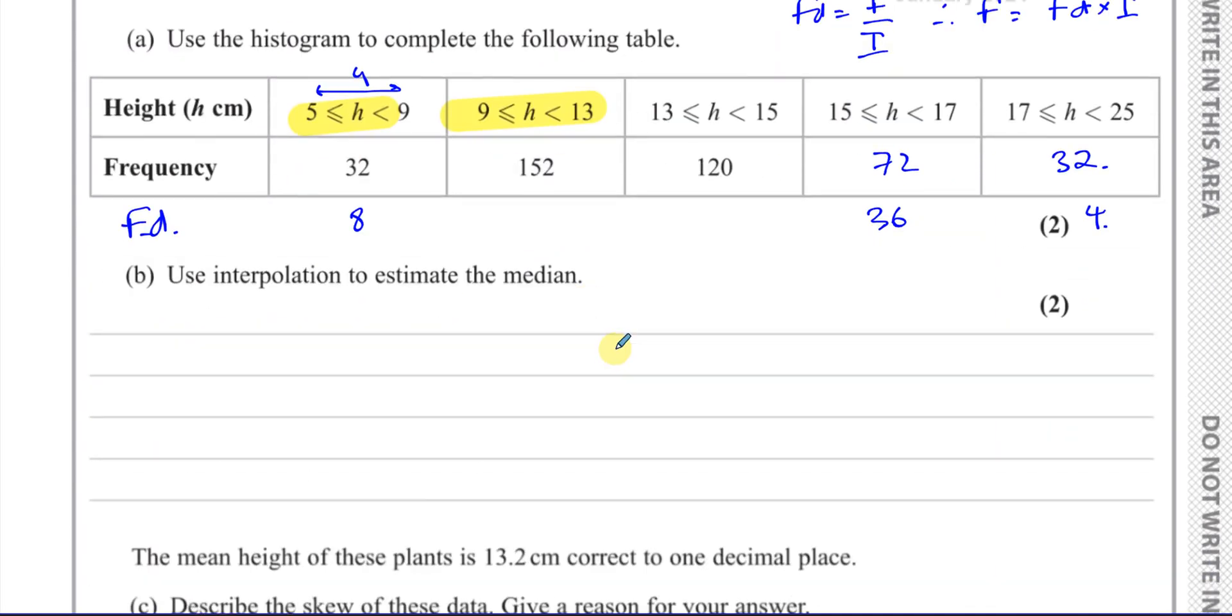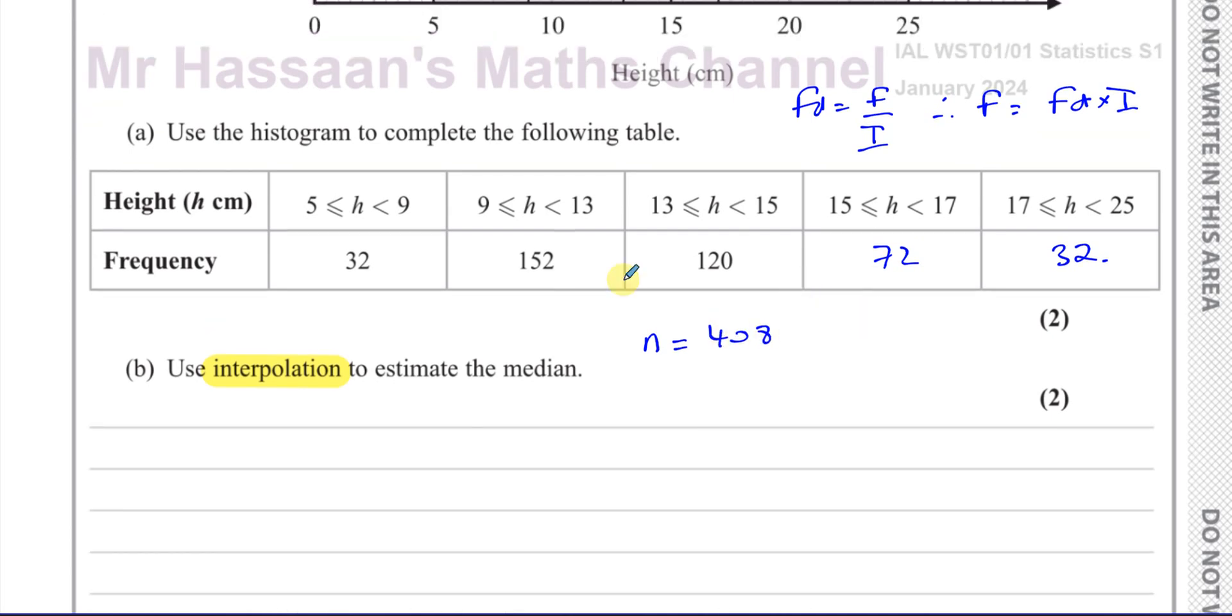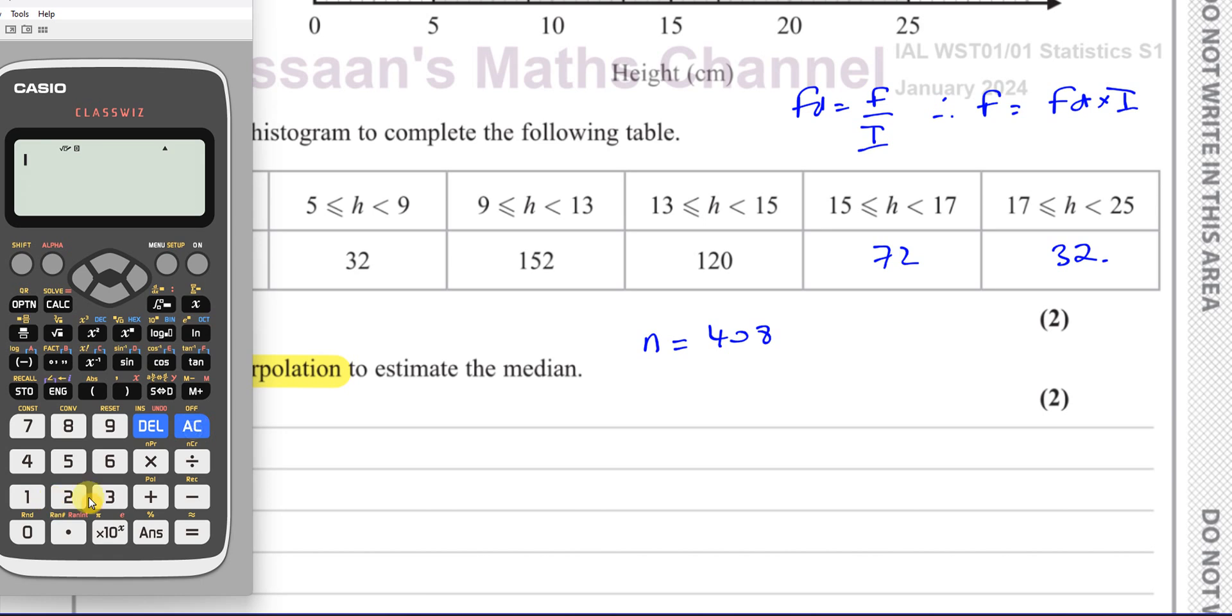Part B says, use interpolation to estimate the median. I'm just going to get rid of some of these things here. Now, interpolation is a type of proportion. We cannot find the actual median because we don't know the values. Everything is grouped. So when we estimate the median, first thing we have to know is we have to basically find the middle value when they're in order of size. So N is equal to the total number of entries, which we can see is 408 from the beginning of the question. If we wanted to check that we did the correct calculations for these two, we could add these together and see if they add up to 408. So we have 32 plus 152 plus 120 plus 72 plus 32. That gives us 408.